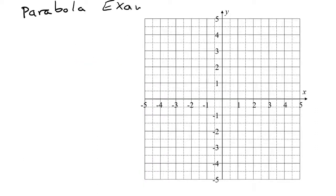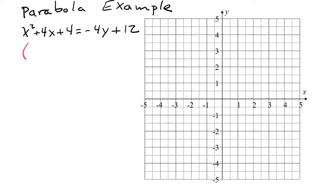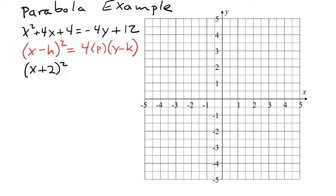Now for another parabola example: x squared plus 4x plus 4 equals negative 4y plus 12. Again, the square is on the x, so we use the standard form x minus h, quantity squared, equals 4p times y minus k. On the left side, x squared plus 4x plus 4 factors as x plus 2, the quantity squared. On the right side, the y has a coefficient of negative 4, which we factor out, leaving negative 4 times the quantity y minus 3.